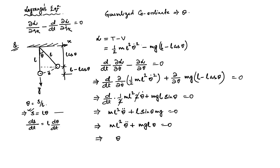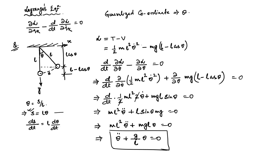Finally, we get θ̈ plus (g/L)θ = 0. This is the same equation we derived earlier using the equilibrium condition at the beginning of this course. Applying Lagrange formulation gives the same result. The natural frequency is ω_n² = g/L, which is the same expression as before. The Lagrange equation gives us the governing equation of motion — in this case a second-order linear differential equation.